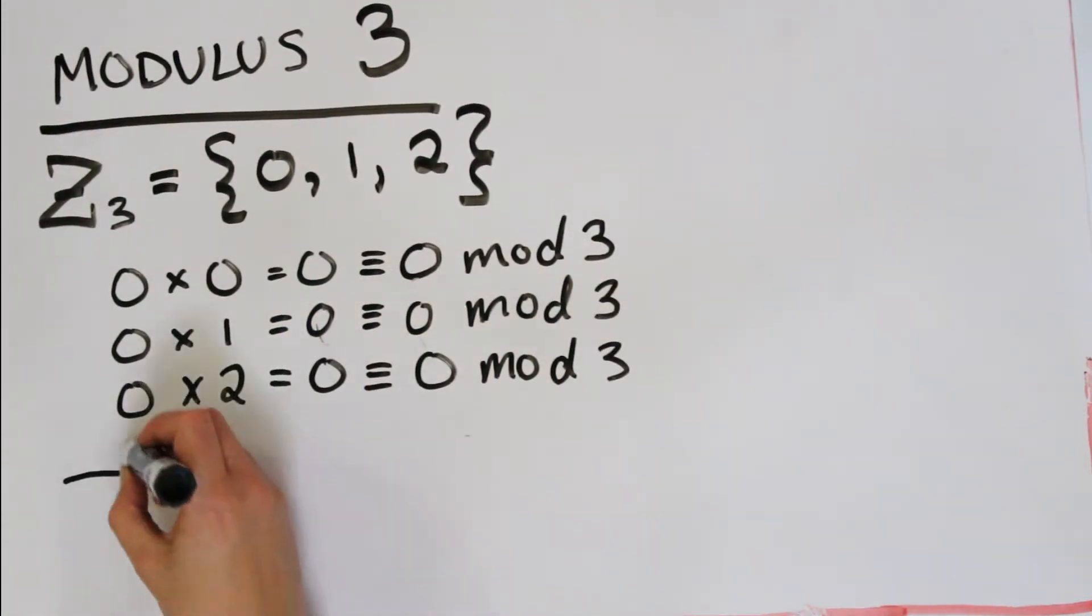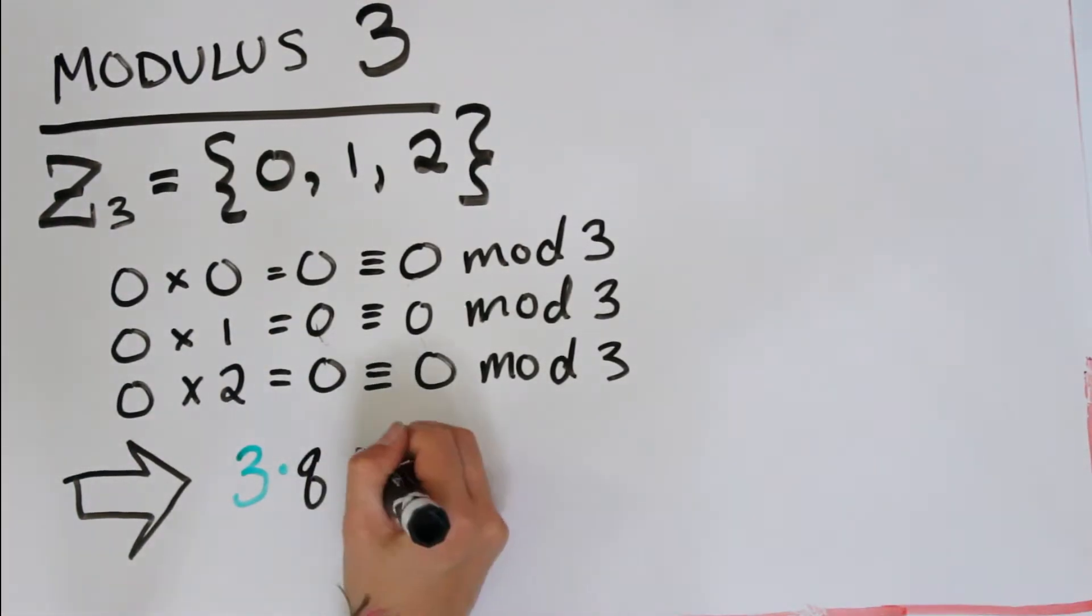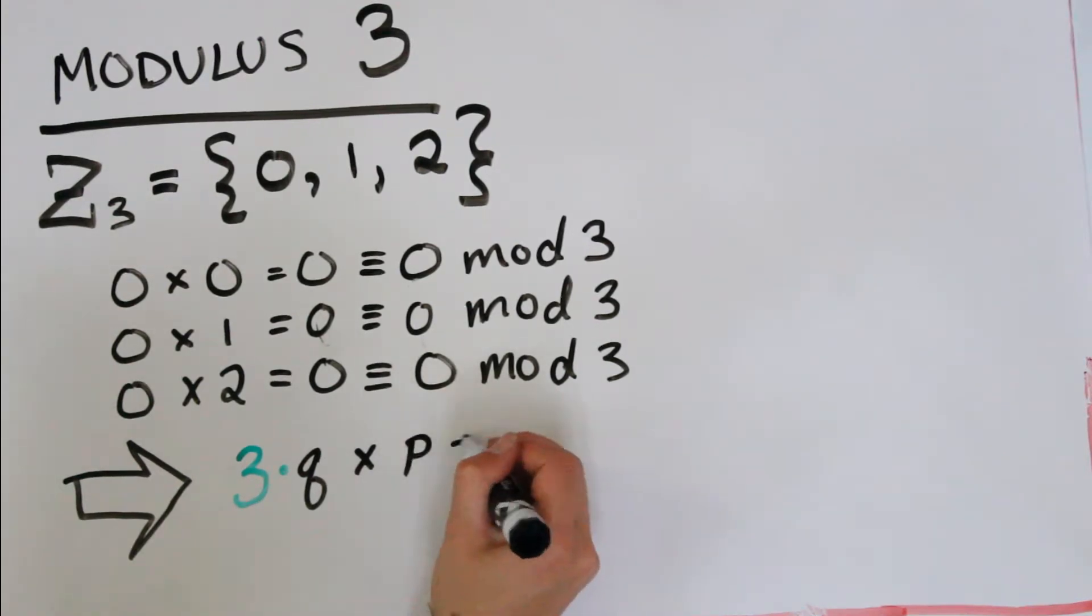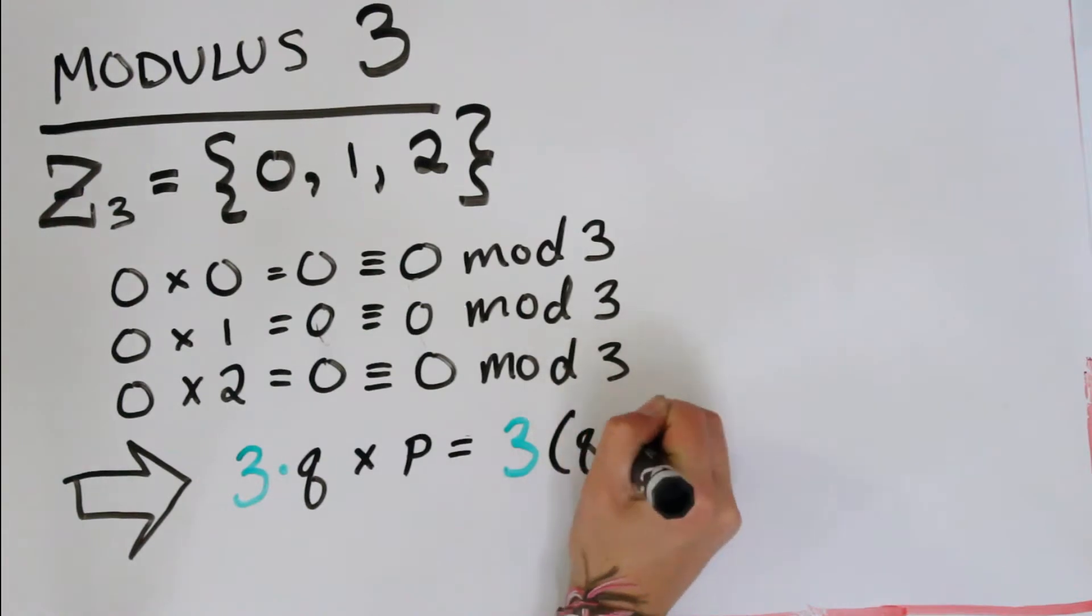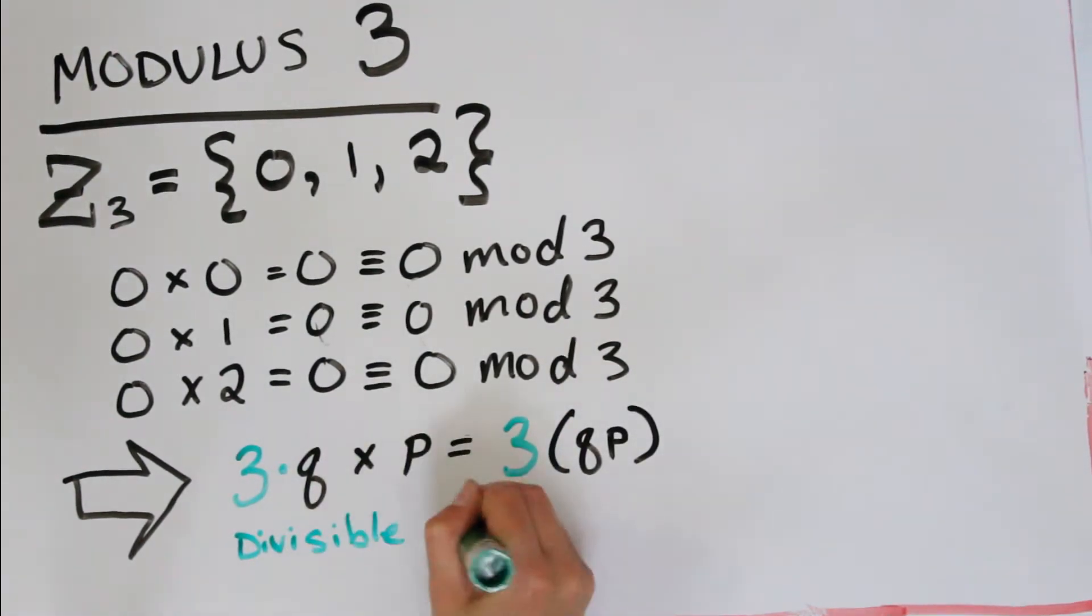A way to kind of understand this beyond just the equations is that any number that is congruent to 0 mod 3 has 3 as a factor. So we multiply that by whatever, and then 3 is still a factor, so the number is still divisible by 3.